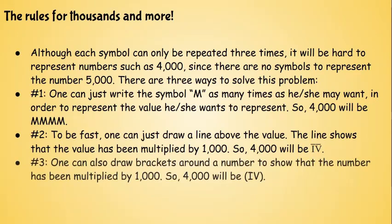And the third way is, one can also draw brackets around a number to show that the number has been multiplied by 1000. So 4000 will just be IV in a bracket, or parentheses. You can also draw brackets twice if you want to multiply it by another 1000.